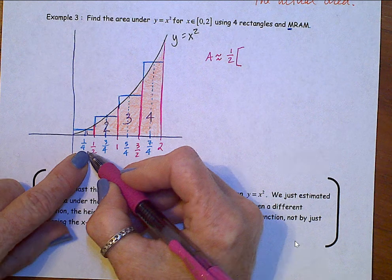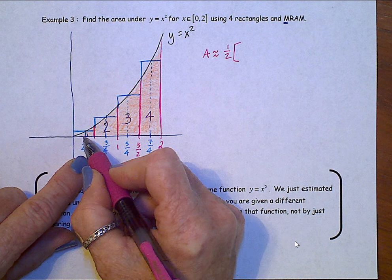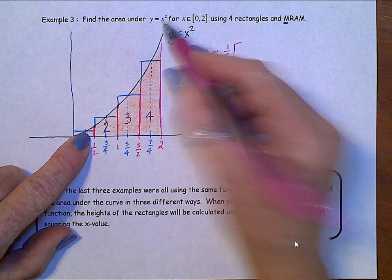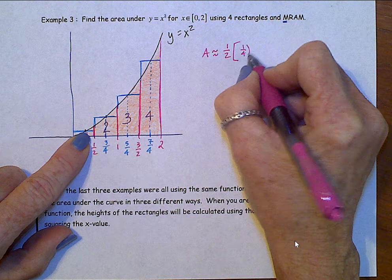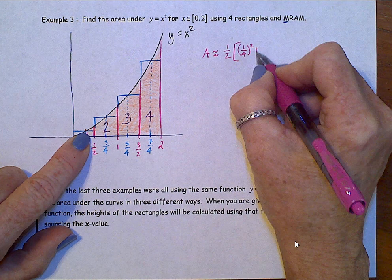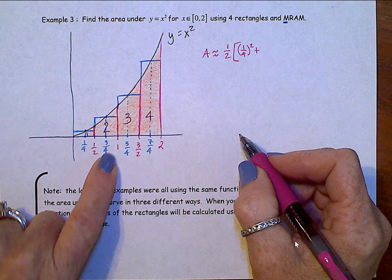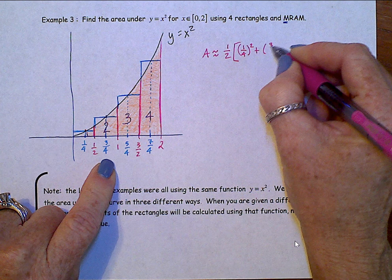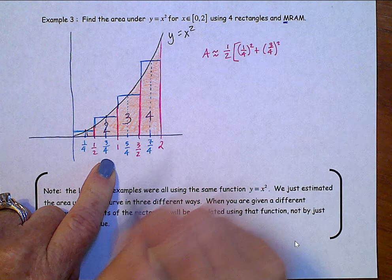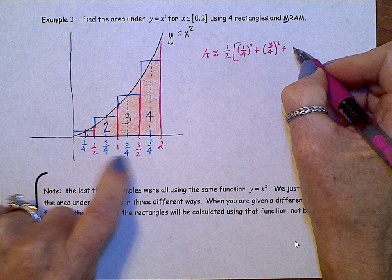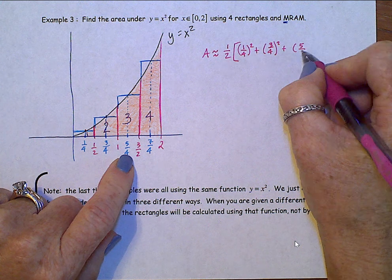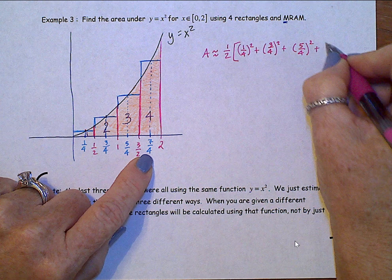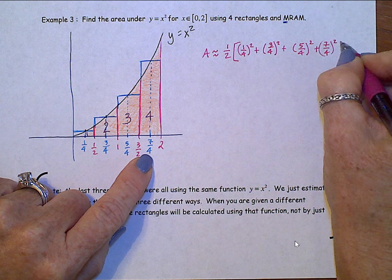So, one half. Now, we need the height of this first rectangle. Well, that height is by where one fourth hits the function, which is where one fourth is squared. Plus, second rectangle's height is where x equals three fourths is going to hit the function. So, that's three fourths squared. Third rectangle, height is five fourths squared, and fourth rectangle, seven fourths squared.